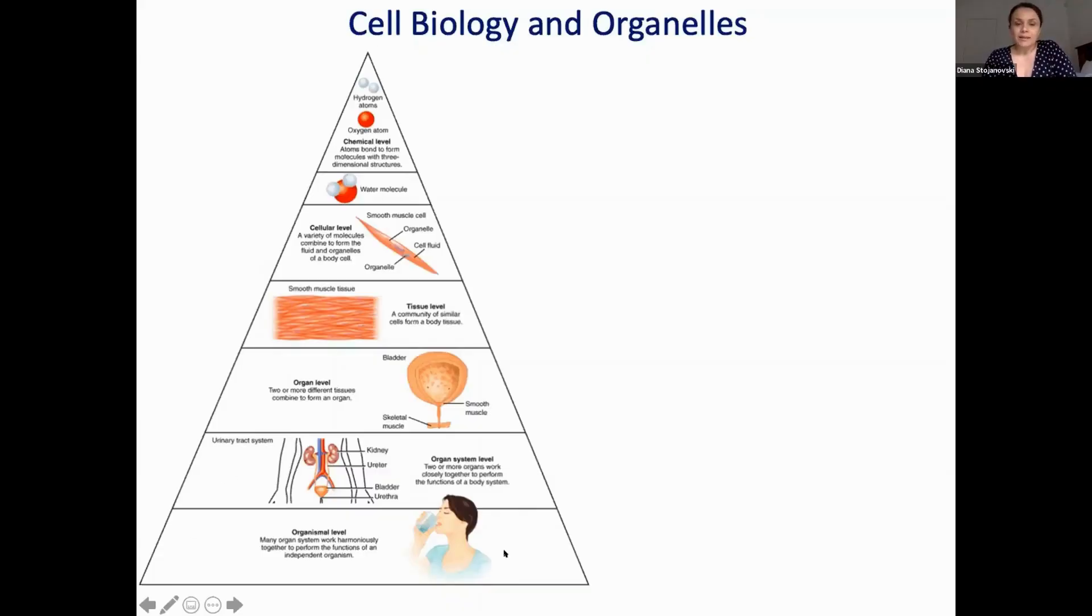If we think about the pyramid of life, at the bottom here we have an organism like ourselves, a human. To function and survive, this human is composed of multiple systems. In this example here you can see a urinary tract system, but we have our cardiovascular system, our nervous system, our muscular system to name a few.